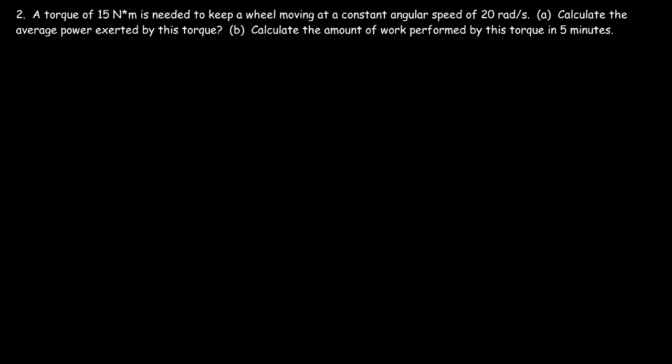Problem two: a torque of 15 Newton meters is needed to keep a wheel moving at a constant angular speed of 20 radians per second. Calculate the average power exerted by this torque, and calculate the amount of work performed by this torque in five minutes.